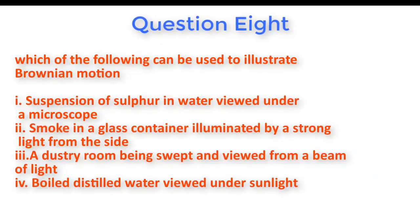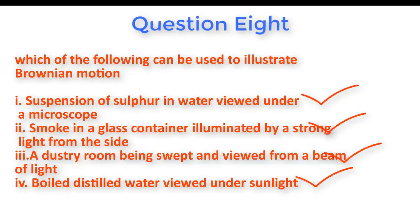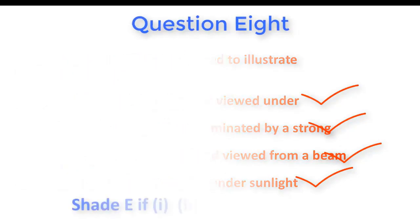Question number eight: Which of these can be used to illustrate Brownian motion? All of the options — a suspension of sulfur in water viewed under a microscope, smoke in a glass container illuminated by strong light from the side, a dusty room being swept and viewed through a beam of sunlight, and boiled distilled water viewed under sunlight — can be used to illustrate Brownian motion. Option E is the correct answer.